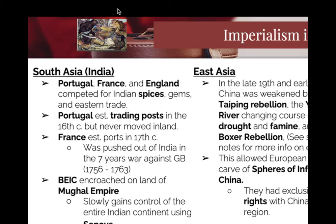Sepoys are super, super well paid in comparison to Indian soldiers — kind of a slap in the face. They are being conquered by well-paid Indians taking over territory. This will be known as the jewel in the crown of British colonies. The most important colony to the British is India, because it has a crazy amount of raw materials and a huge population.